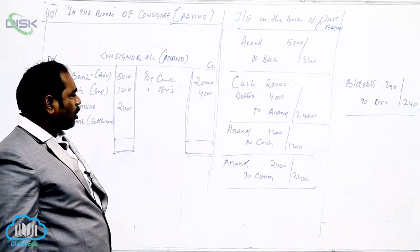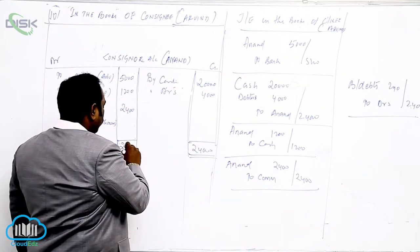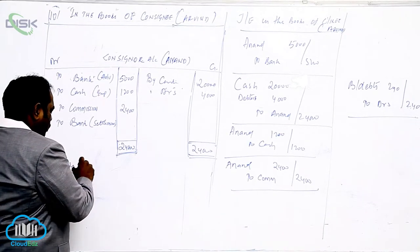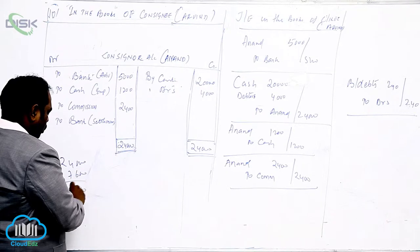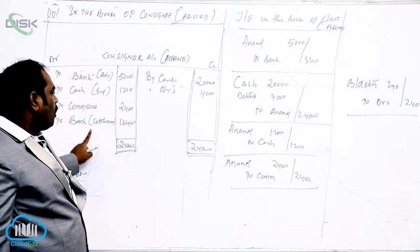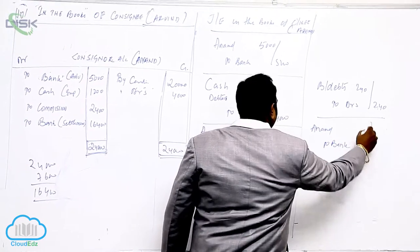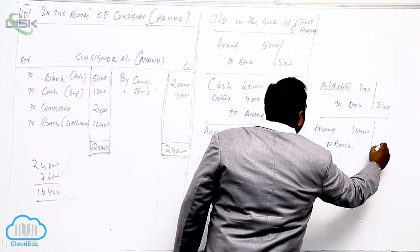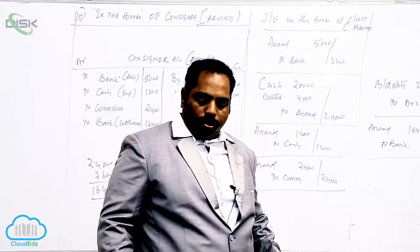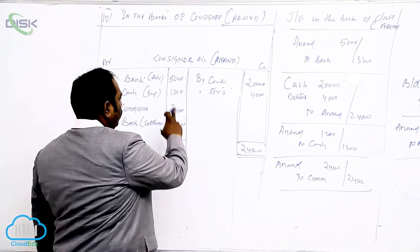Now closing of account and settlement. From 24,000 minus the deductions totaling 7,600, we get 16,400. Sixteen thousand four hundred is the settlement amount. Entry: Anand Account debit to Bank — 16,400. This is the settlement amount which has to be paid by the consignee to the consignor, so Kanzai pays 16,400 to Anand.